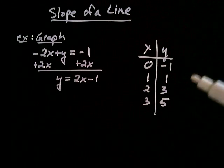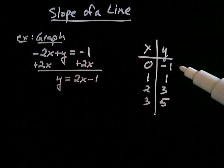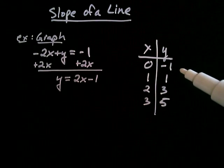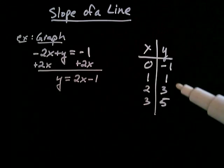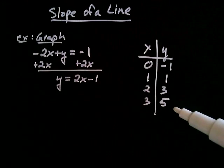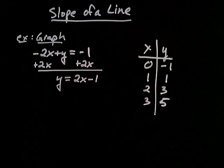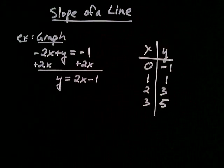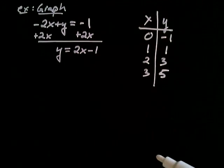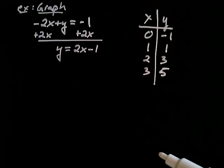So now let's go ahead and plot these 4 ordered pairs. I know I'm going to get a line, so let's go ahead and graph that line.